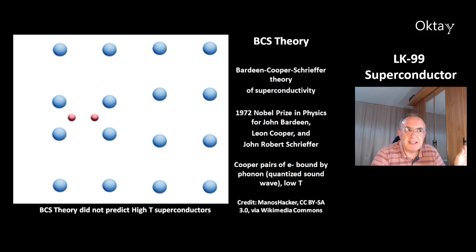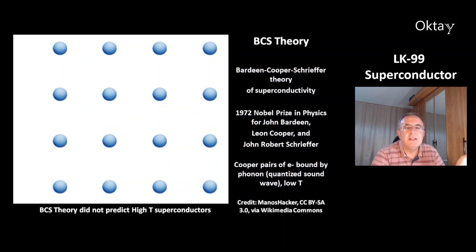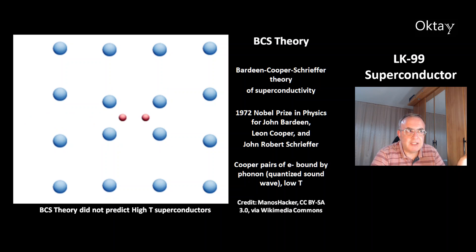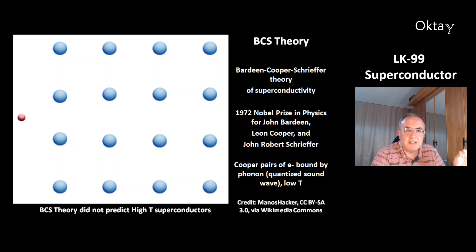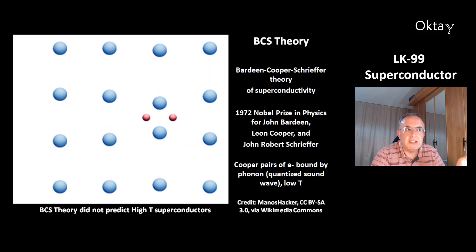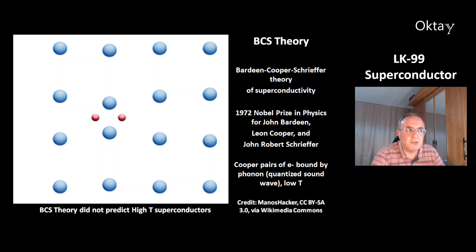This is the BCS theory — the Bardeen-Cooper-Schrieffer theory of superconductivity. For this theory, the Nobel Prize in Physics was given to John Bardeen, Leon Cooper, and John Robert Schrieffer in the year 1972.